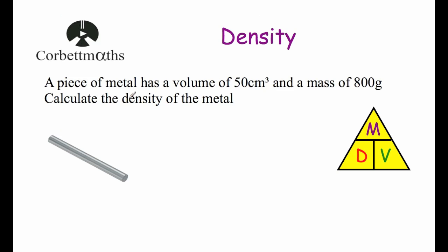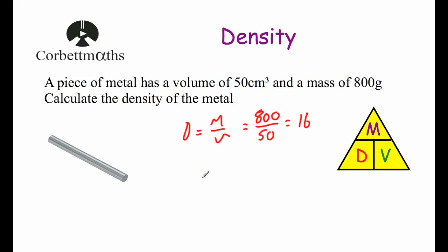Let's have a look at our first example. A piece of metal has a volume of 50 centimeters cubed and a mass of 800 grams. Calculate the density of the metal. Density equals mass divided by volume, so that's 800 divided by 50, which gives us 16. Making sure we get the correct units — because it was in grams and centimeters cubed — the answer is 16 grams per centimeter cubed. That is the density of the metal.